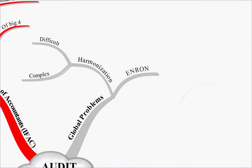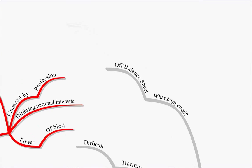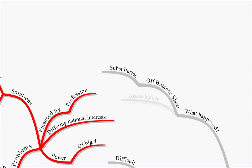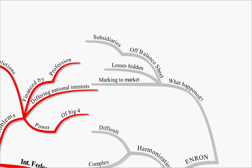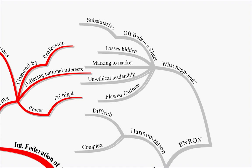Another problem was Enron. At Enron, there were off-balance-sheet transactions — subsidiaries were set up and not shown on the Enron balance sheet, where they could hide losses and avoid tax. They were marking to market at the time, which meant they were crystallizing profits before they'd actually made them. There was also unethical leadership throughout the firm and a flawed culture.